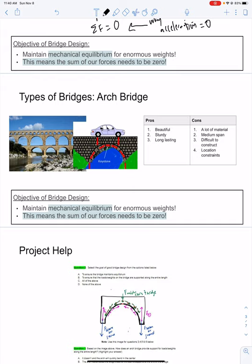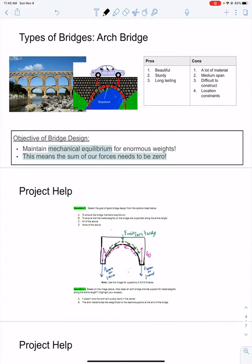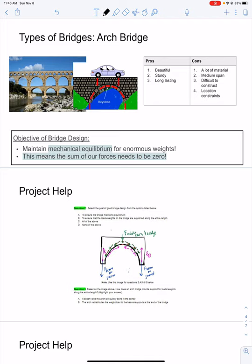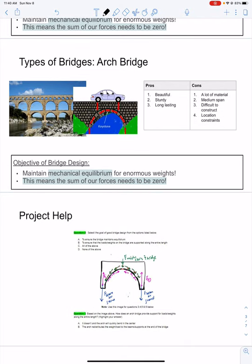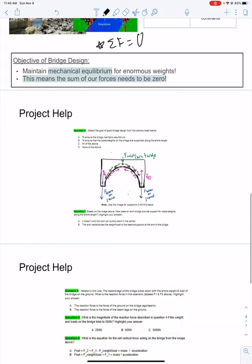The pros and cons of arch bridges: one, they're very beautiful. Two, they tend to be very sturdy and long-lasting. This is a Roman aqueduct that's been around for about a thousand years. The cons are medium span, some location constraints, and it really does take a lot of material to build these. But again, our key point is that the sum of the forces are zero. Our bridge needs to be in mechanical equilibrium where the sum of our forces is zero, which means there's no acceleration, in order to stay upright and sturdy and not collapse.